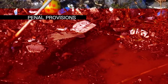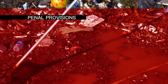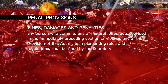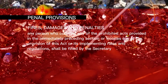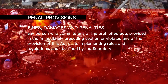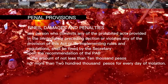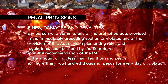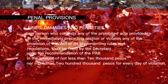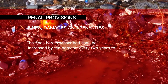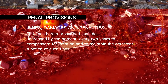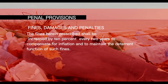What are the penal provisions stated in RA 9275? Any person who commits any of the prohibited acts provided in the immediately preceding section, or violates any of the provisions of this act or its implementing rules and regulations, shall be fined by the Secretary upon the recommendation of the PAB in the amount of not less than 10,000 pesos and not more than 200,000 pesos for every day of violation. The fines prescribed shall be increased by 10% every two years to compensate for inflation and to maintain the deterrent function of such fines.